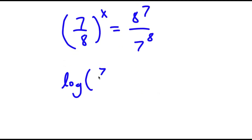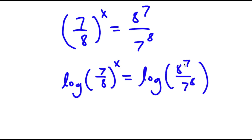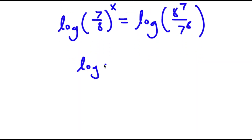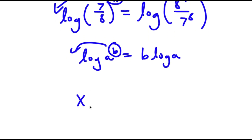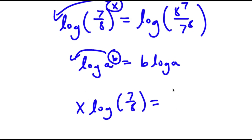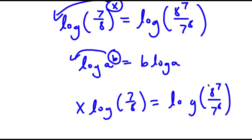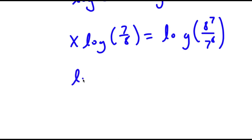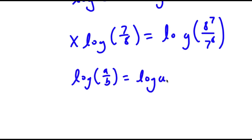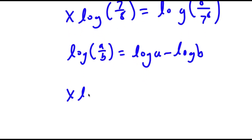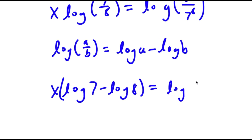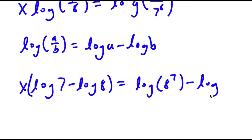Now I take the log on both sides. So I have log of (7/8) to the power of x equals log of (8^7 over 7^8). Using the power rule, I move x to the front: x times log(7/8) equals log(8^7 over 7^8). Using the quotient rule, log(7/8) equals log 7 minus log 8, and the right side becomes log 8^7 minus log 7^8.